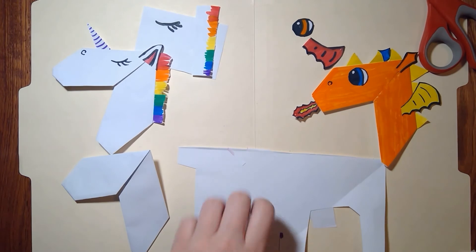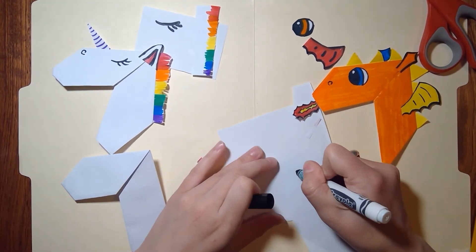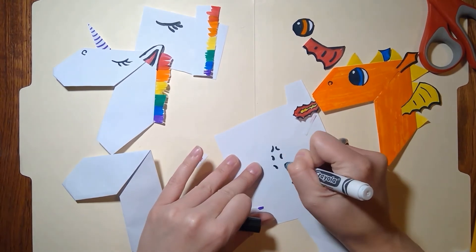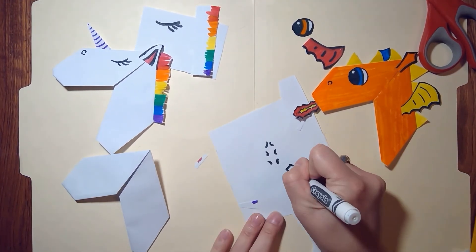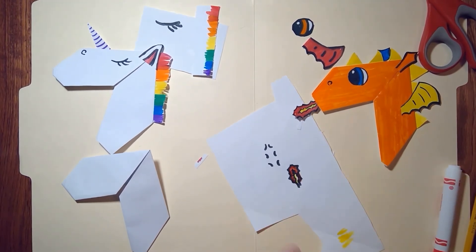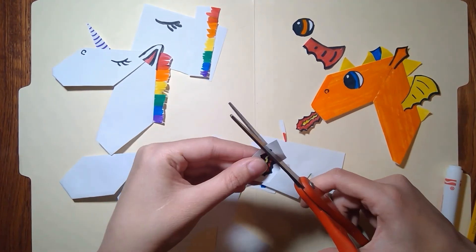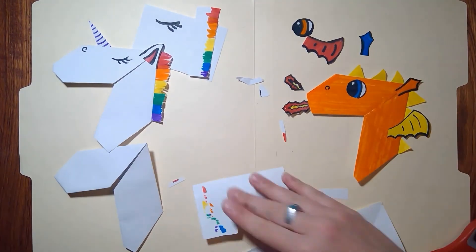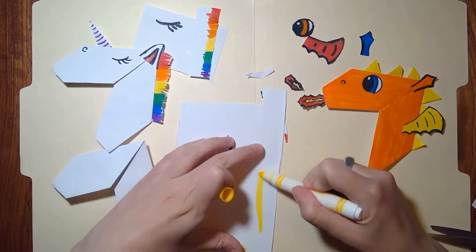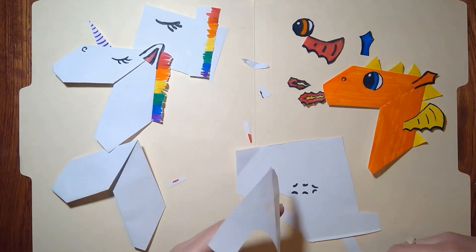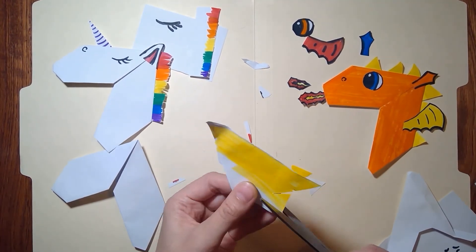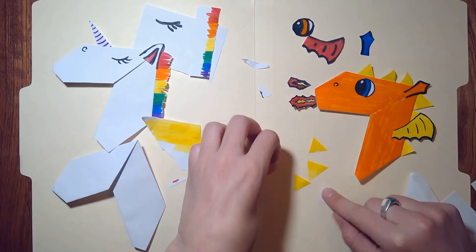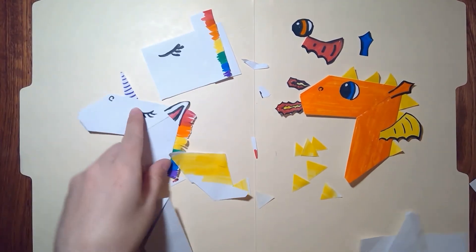Now, I'm going to make the fire on his mouth, which are just a whole bunch of curvy lines kind of sticking out like that. Now, oops, I forgot the most important thing of the unicorn, the horn.